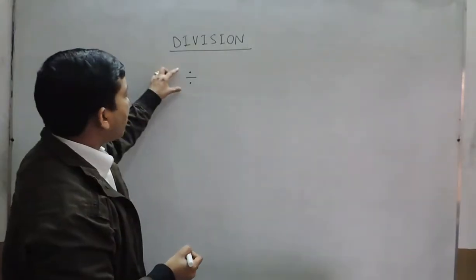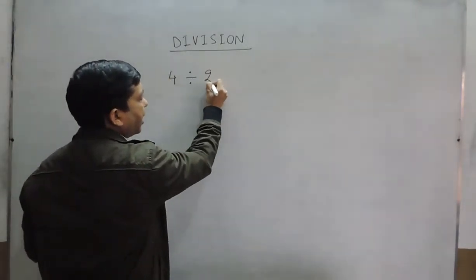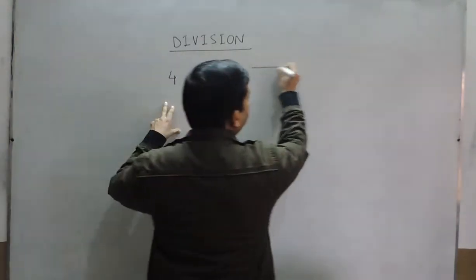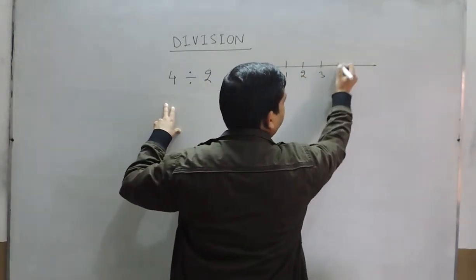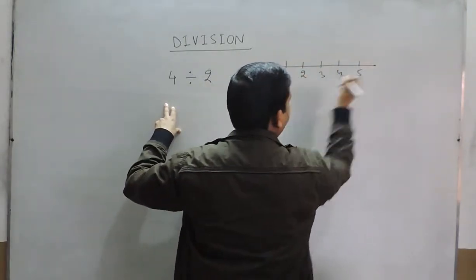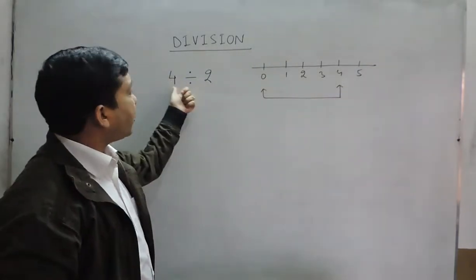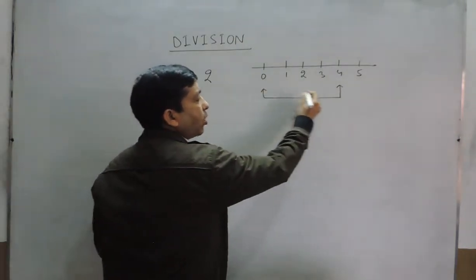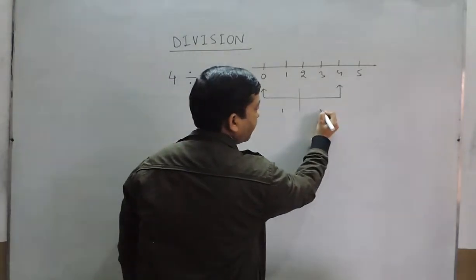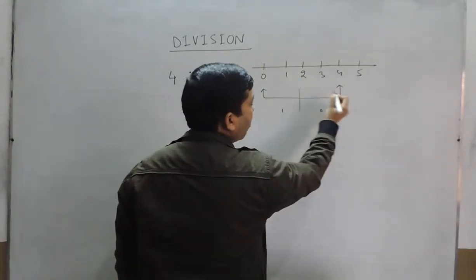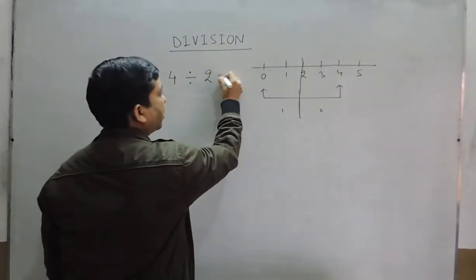When we talk about division, we can write it as a number divided by another number. As we have discussed everything on the number line, from zero to four there is a part, and this four has to be divided by two. This whole section is divided into two parts - one part and the second part. If we divide the whole four into two parts, this comes out to be two. So four divided by two is two.